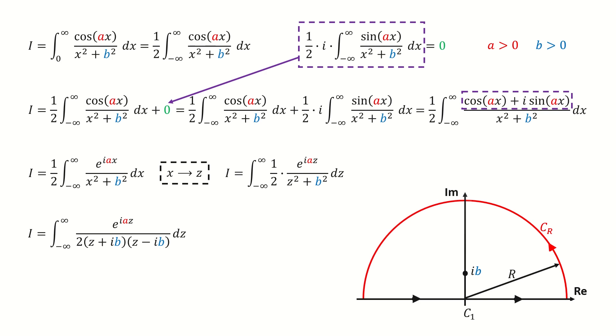Now let's draw the contour. Here we choose a semicircle contour on the upper half plane. And we can see, ib is a simple pole inside our contour. We mark the path from negative infinity to infinity on the real axis as c1. And we mark this large semicircle as cr.